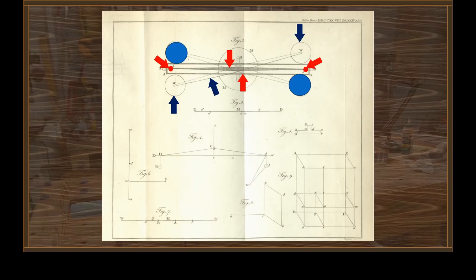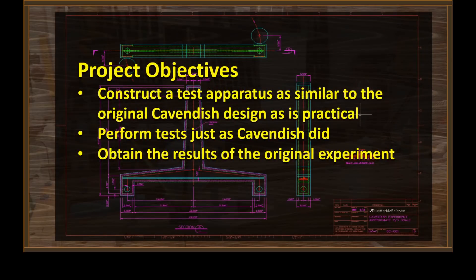The goal is to replicate this experiment as closely as possible to what Cavendish did originally. Some of that isn't totally practical — Cavendish used 350-pound masses for his large mass, which is beyond the presenter's capability. But something on the order of 75 pounds should be manageable. The plan is to build a test apparatus very similar to Cavendish's, perform the test exactly the way Cavendish did, and perhaps add a laser to verify the accuracy of the manual measurements — while still expecting similar accuracy in results.